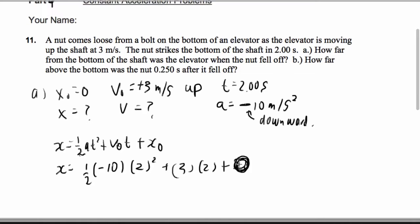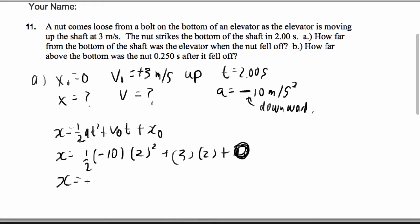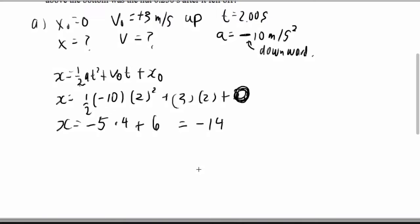And then we've got 2 squared here plus 3 times 2 plus x naught, which is 0. So continuing, we're going to say x is negative 5 times 4, plus 6.